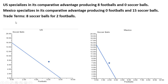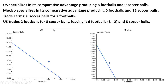At the beginning of this presentation, we said the trade terms that these countries agreed to would be 8 soccer balls for 2 footballs. So what does each country consume after the trade? The US is going to trade 2 footballs away in exchange for 8 soccer balls, leaving the US with 6 footballs (8 minus 2) and the 8 soccer balls from Mexico. After specializing and trading, the US is able to consume 6 footballs and 8 soccer balls — consuming outside its PPF because of specialization and trade.